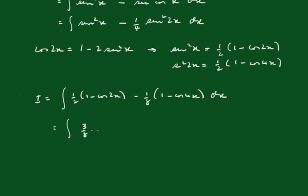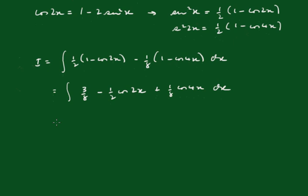That's three eighths minus one half cos 2x plus one eighth cos 4x dx. So now integrating, we get...